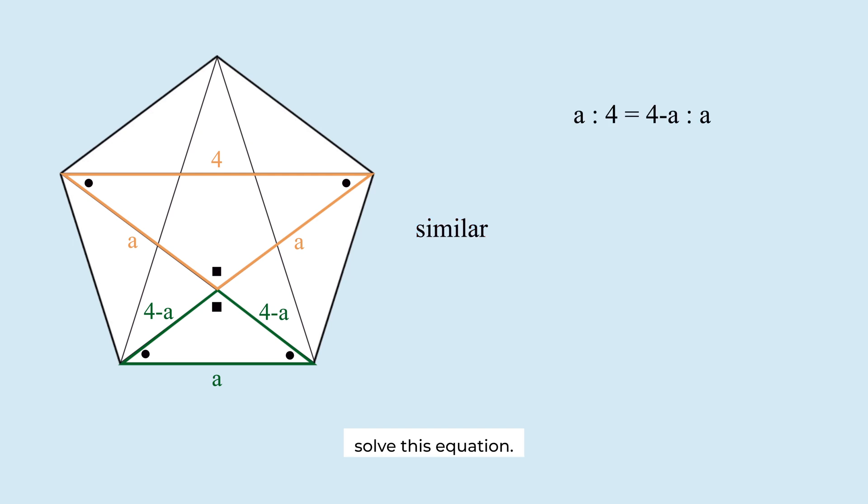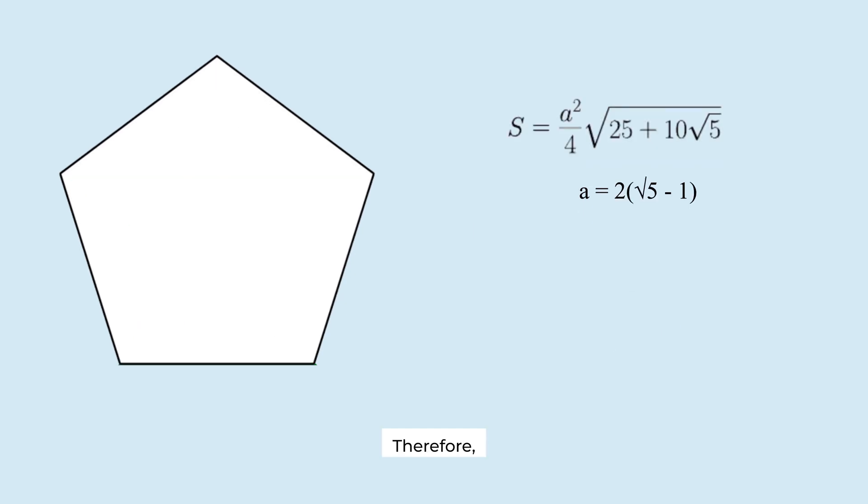Solve this equation. Since A must be larger than 0, A is equal to this value. Therefore, the area of the regular pentagon is this.